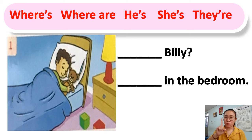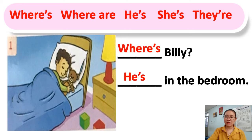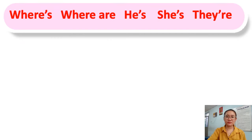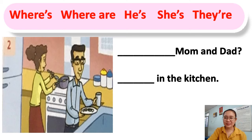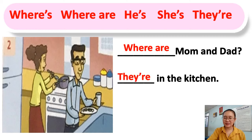Because Beauty is one person, we must use 'where is'. And the answer — remember, Beauty is a boy, so we use 'he'. He is in the bedroom. Good job! Now, who? Mom and Dad in the kitchen. Mom and Dad are two people, so we use 'where are', and the answer is: they are in the kitchen. Well done!